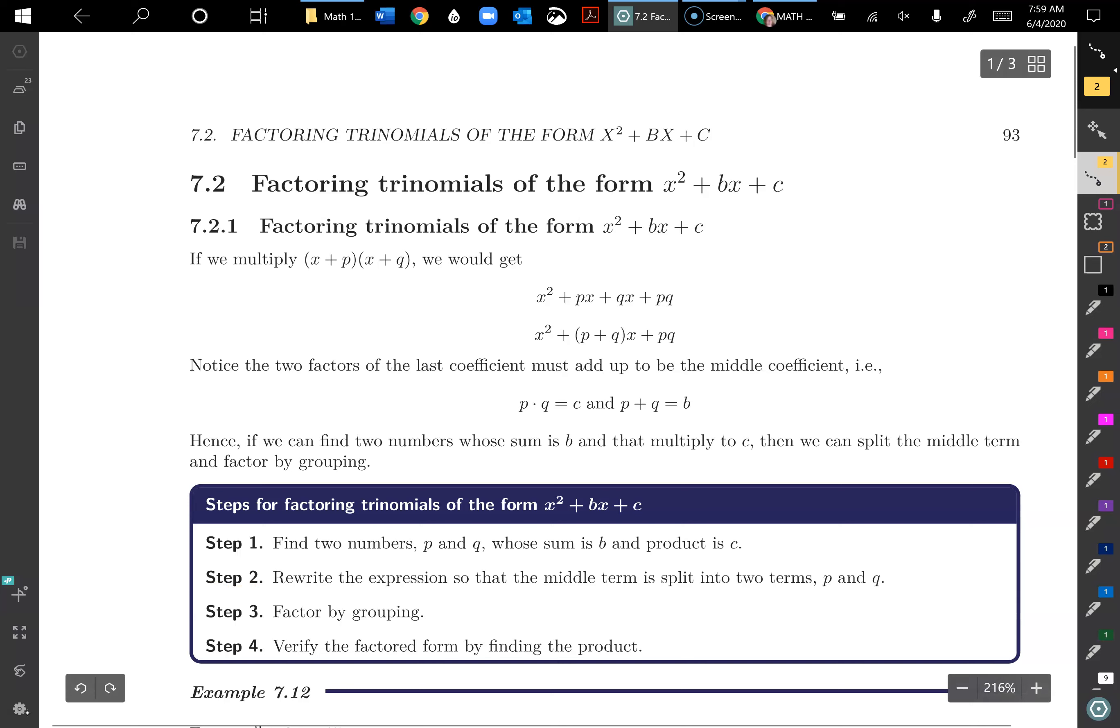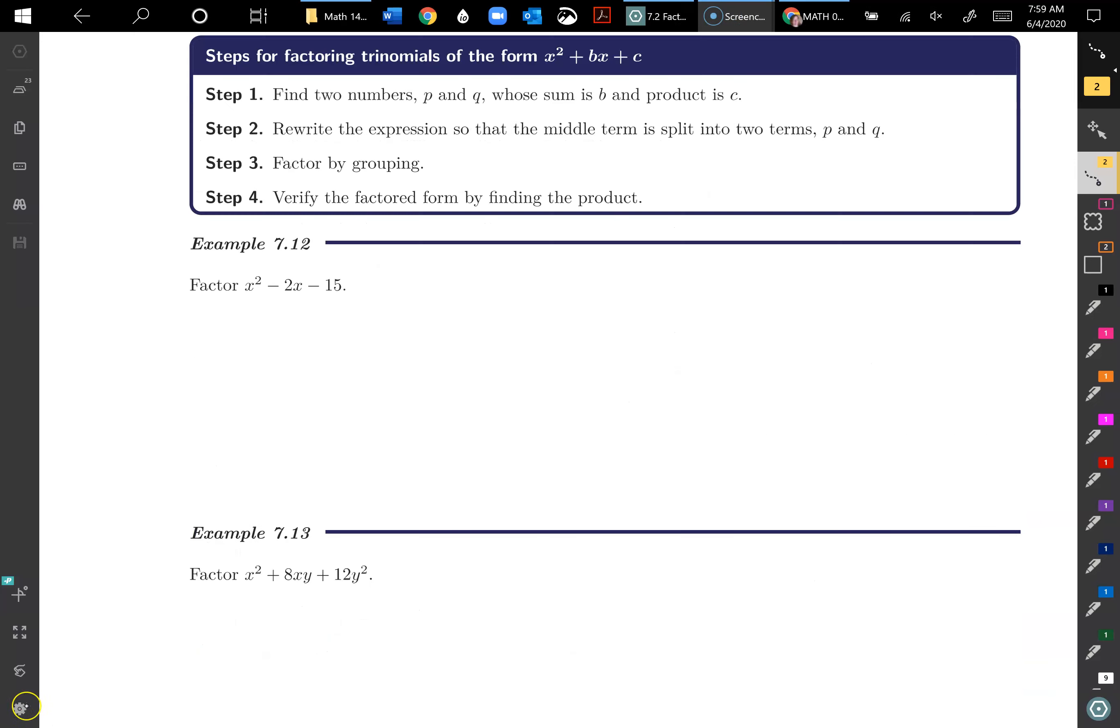Step two, rewrite the expression so that the middle term is split into two terms, p and q. And then we're going to use factor by grouping, and then we'll verify by multiplying back to make sure it's correct. Okay, so I'll leave the steps showing here. And then we're looking at example 7.12, factor x squared minus 2x minus 15.